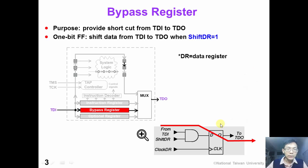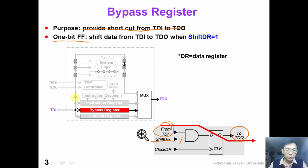First, let's introduce the bypass register BR. The purpose of the bypass register is to provide a shortcut from TDI to TDO. The structure of a bypass register is very simple — it is just a one-bit flip-flop. When the control signal shift_DR is equal to one, we can shift our test data from TDI to TDO. In this way we provide a shortcut through this chip, so this chip is not tested by JTAG.